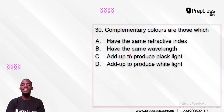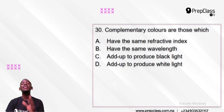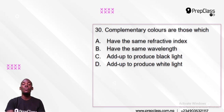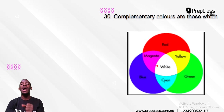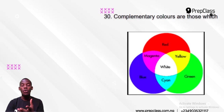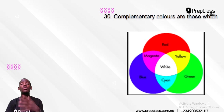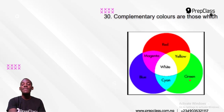That covers number 29. Now let's get to number 30. Complementary colors are those which: A have the same refractive index, B have the same wavelength, C add up to produce black light, D add up to produce white light. Do you have any idea which one is correct? Colors of light are complementary when they combine to produce white light.